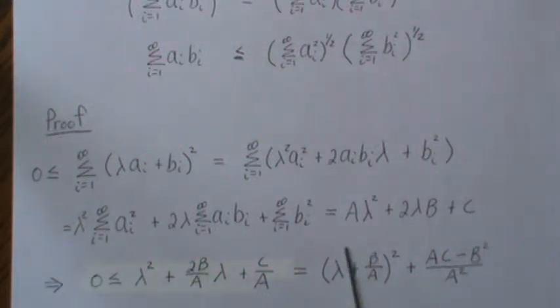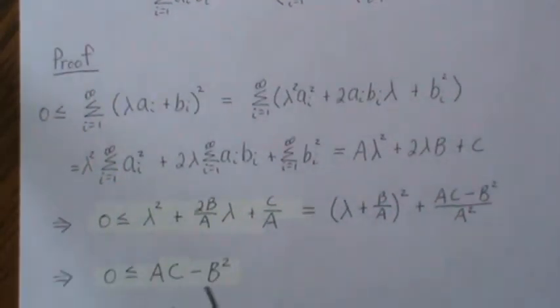So for this whole thing to be positive, right, greater than zero, then this has to be positive. But A squared is always positive. So really we're talking about the A times C minus B squared has to be positive, which is this equation.